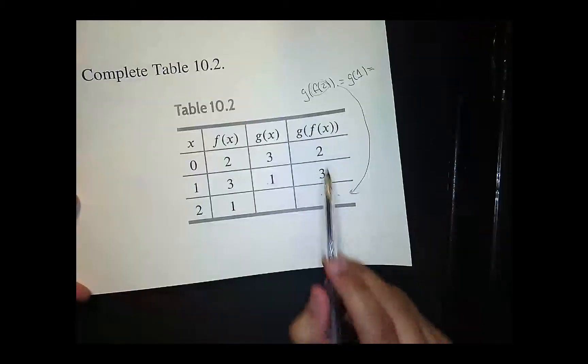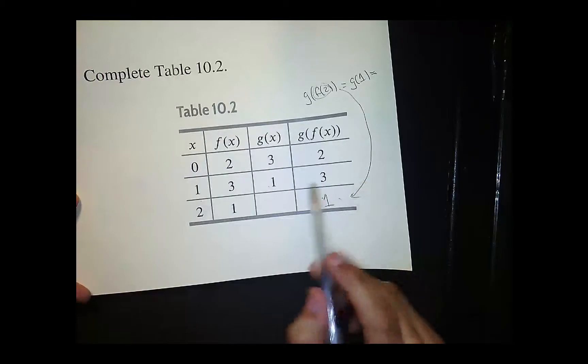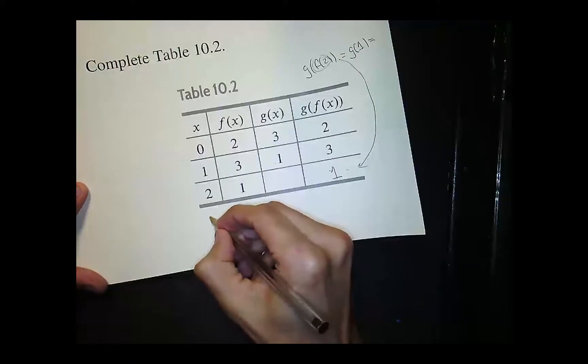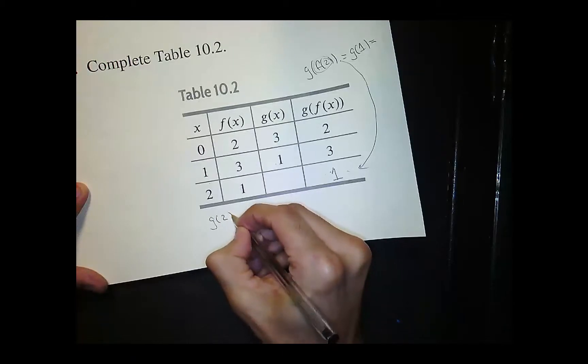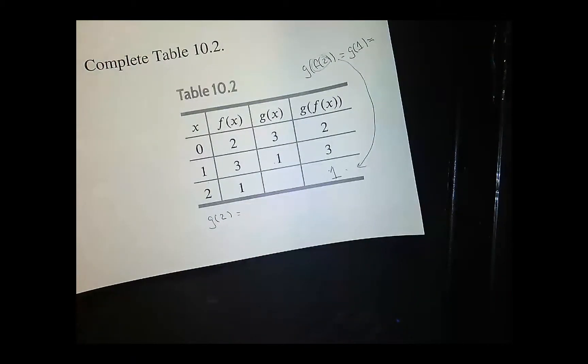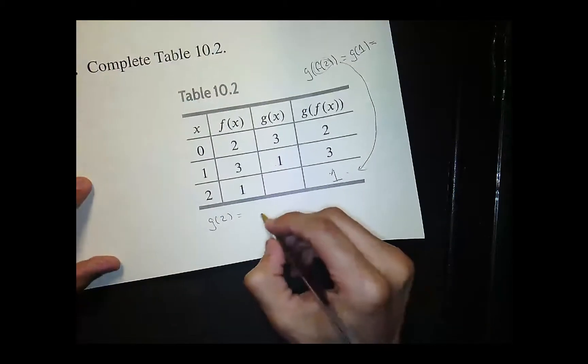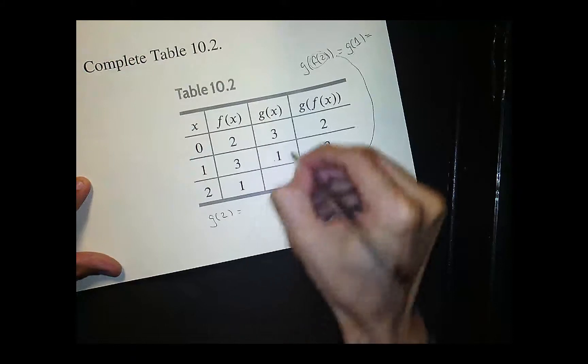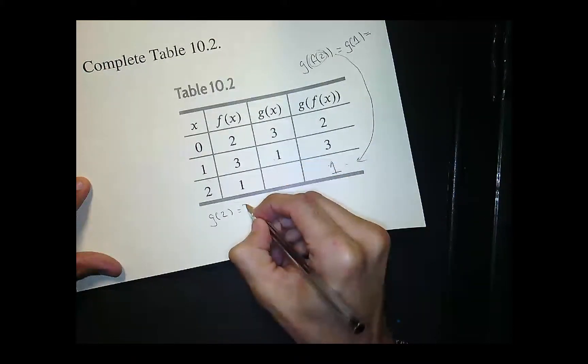Okay, after you're done with the rightmost column where you have the composition then you can move on to the other columns. So here I want to find g of 2. And then this is where it maybe gets a little tricky but I'm going to give you a nice shortcut to get to your answer. So we want g of 2 is what we're looking for here, right? g of 2 is what's missing.